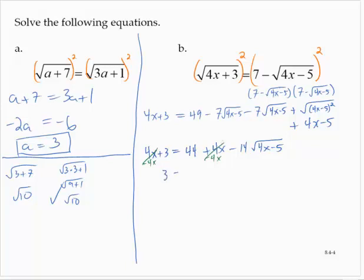So I now have 3 is equal to 44 minus 14 times the square root of 4x minus 5. Subtracting 44 from both sides, I have negative 41 is equal to negative 14 times the square root of 4x minus 5.